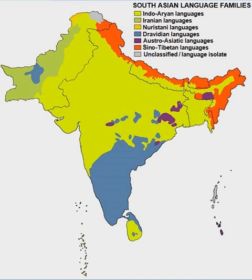Tamil literature has a rich and long literary tradition spanning more than 2000 years. The oldest extant works show signs of maturity indicating an even longer period of evolution. Contributors to the Tamil literature are mainly from Tamil people from Tamil Nadu, Sri Lankan Tamils from Sri Lanka, and from the Tamil diaspora; there have also been notable contributions from European authors. The history of Tamil literature follows the history of Tamil Nadu, closely following the social and political trends of various periods. The secular nature of the early Sangam poetry gave way to works of religious and didactic nature during the Middle Ages. Jain and Buddhist authors during the medieval period, and Muslim and European authors later, contributed to the growth of Tamil literature.